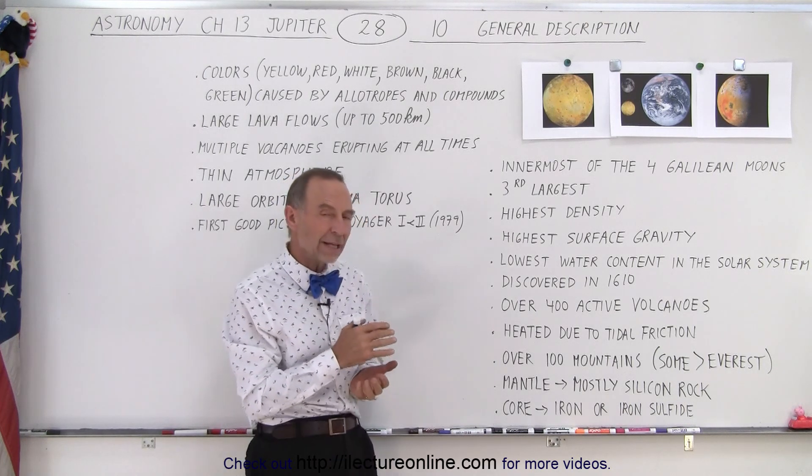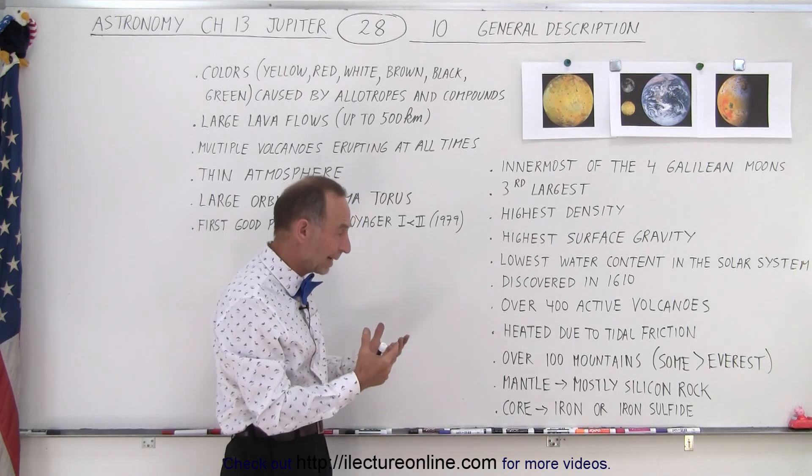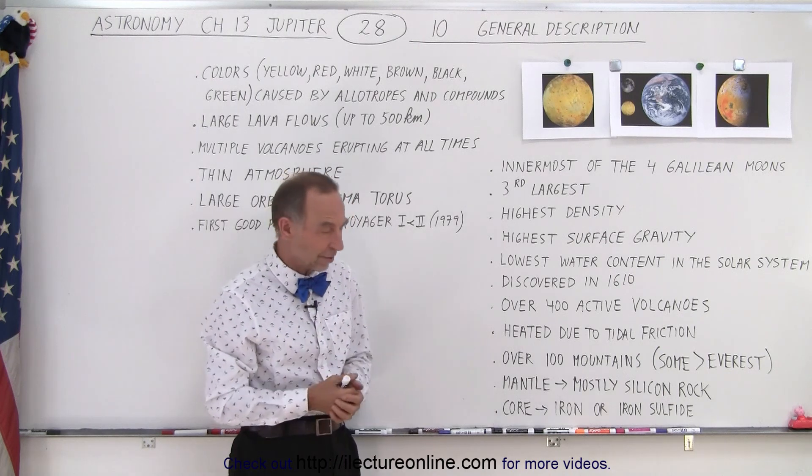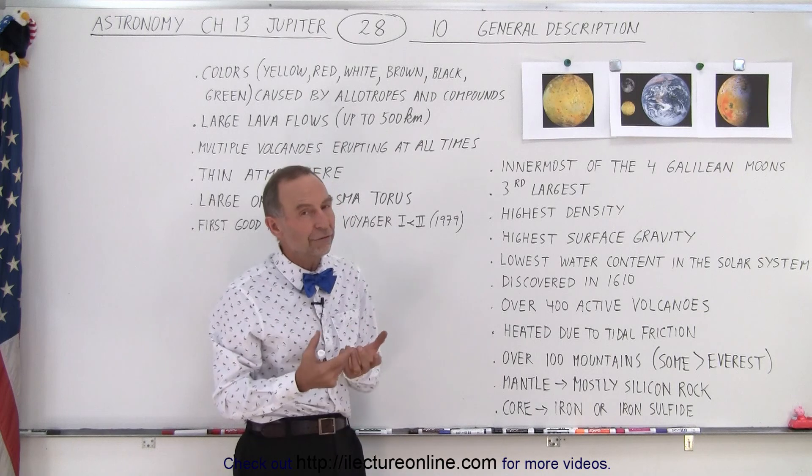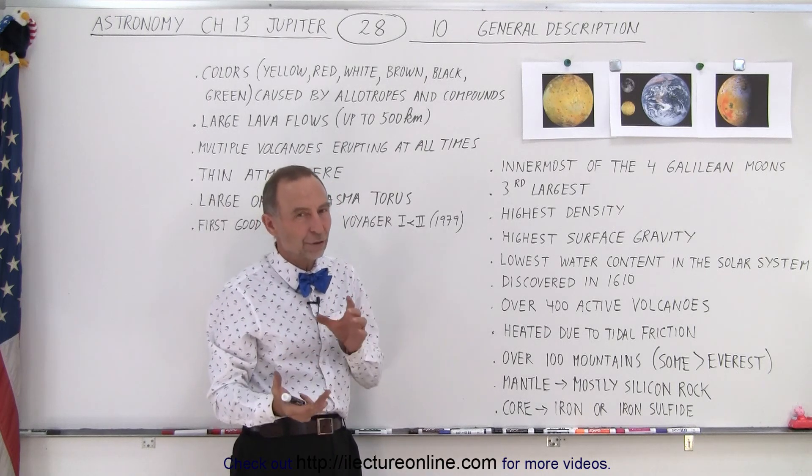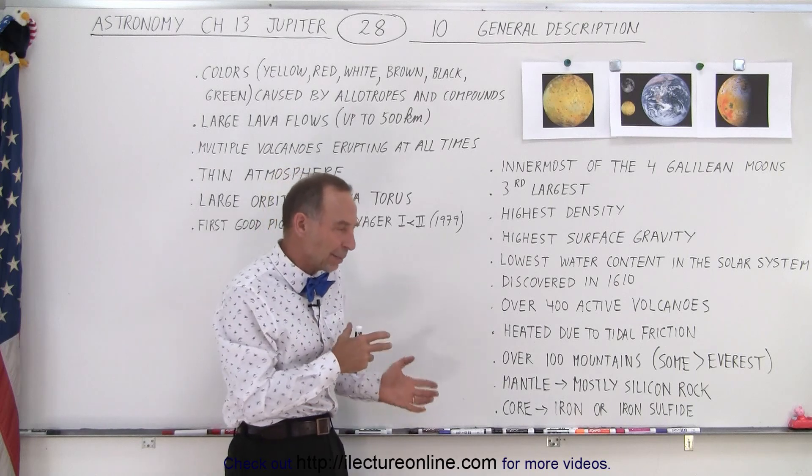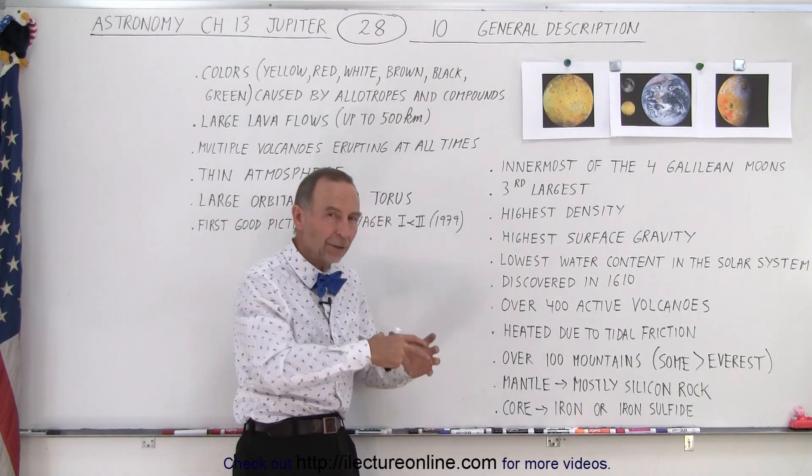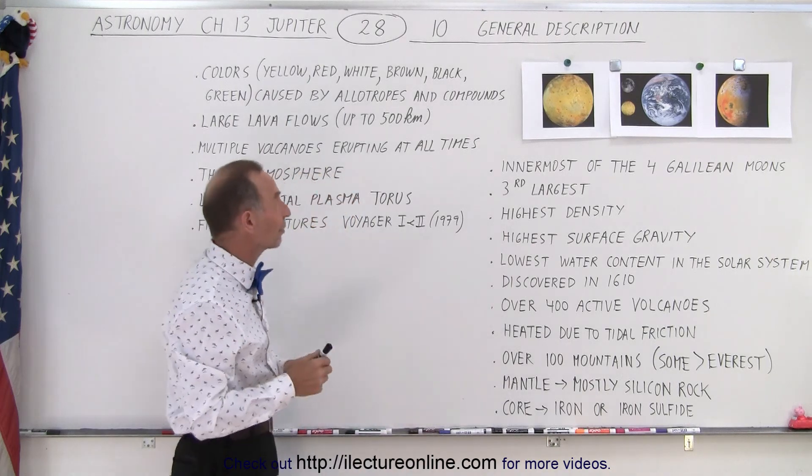The mantle is mostly made out of silicon rock, although it does have a fair amount of sulfur within it. But the biggest part of the component is silicon, just like it is on the Earth. And the core is iron or iron sulfite. They're not quite sure if it's purely iron or there's an iron sulfite mixture in there. And depending upon which way it is, the core is either a little bit smaller if it's pure iron, or a little bit bigger if it's iron sulfite to account for that particular density of the moon.